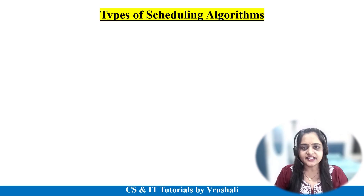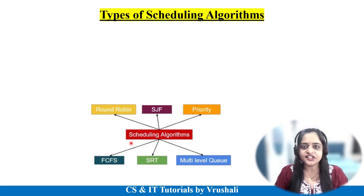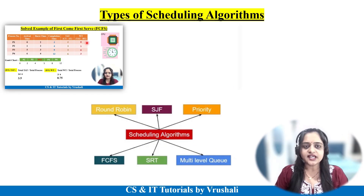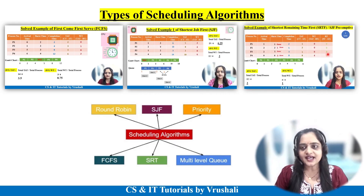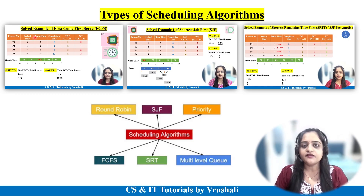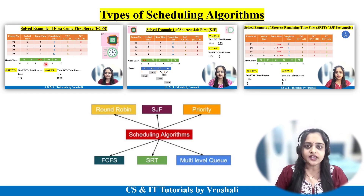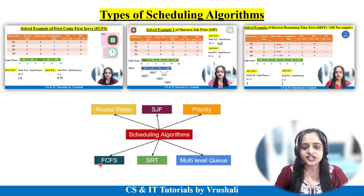As we discussed earlier, the operating system has multiple scheduling algorithms. Previously we have discussed FCFS, then SJF — shortest job first — and SRTF, shortest remaining time first, which is also called the SJF preemptive algorithm. We have discussed all the scheduling algorithms with solved examples, and for your exam point of view, all these examples are important.